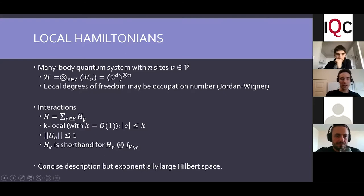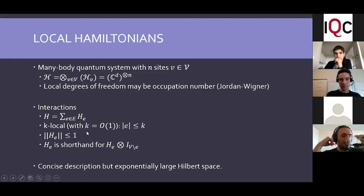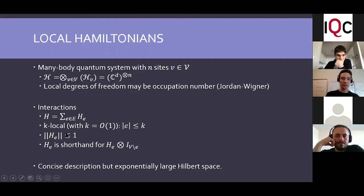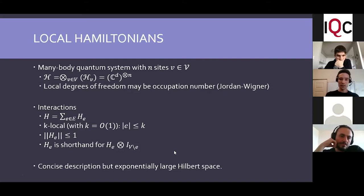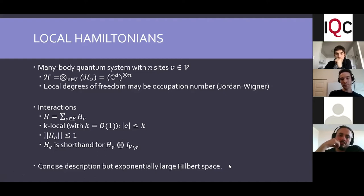We index the local terms by e, thinking of them as living on hyperedges of a hypergraph. It's k-local, meaning each hyperedge is incident to at most k vertices, where k is a constant. We also have bounded interaction strengths in terms of local operator norms. This operator is called the local Hamiltonian, and it gives a concise description of the system in polynomial space — but since the Hilbert space itself has exponential size, you can't use ordinary diagonalization methods to find the energies.